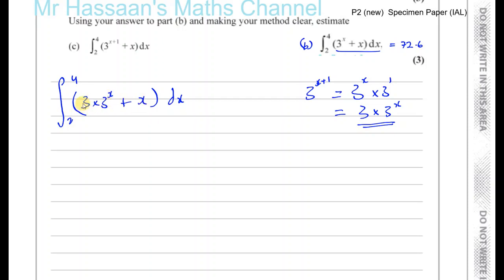I can't say this is 3 times all of that. If I multiply all of this by 3, I don't get the same as this. I'll get 3 times 3 to the power of x plus 3x. So what I could do is the following.